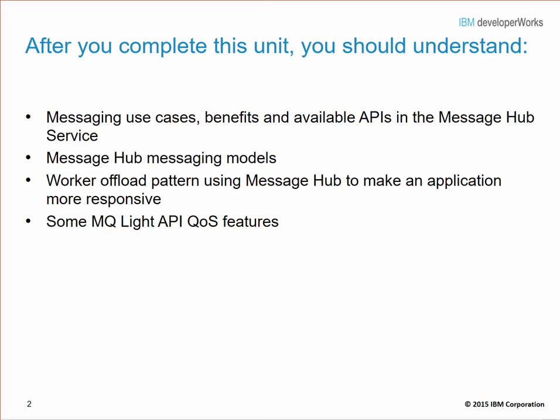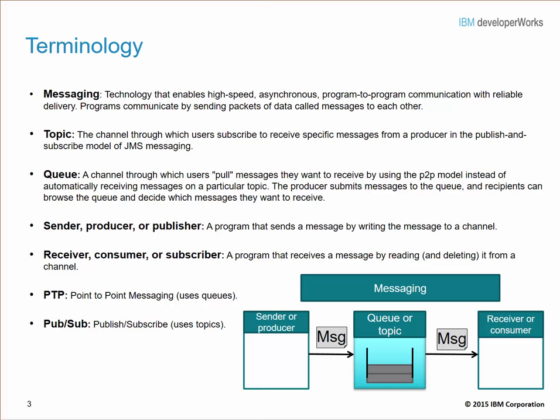The MQLite API is one of the APIs available to developers utilizing the MessageHub service in Bluemix. So let's look at some terminology used in messaging. Messaging is a technology that allows high-speed asynchronous program-to-program communication with reliable delivery. Programs utilizing messaging communicate by sending packets of data called messages to each other.